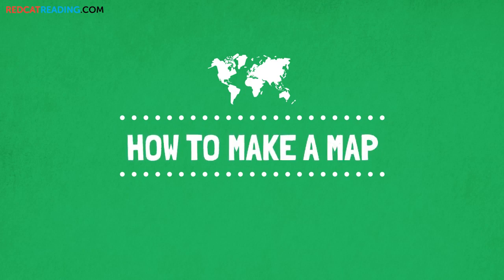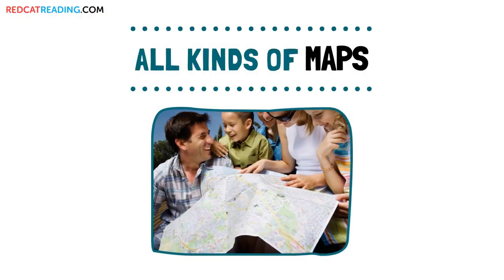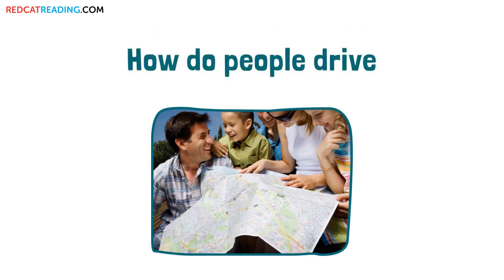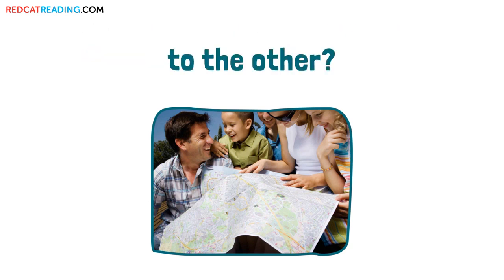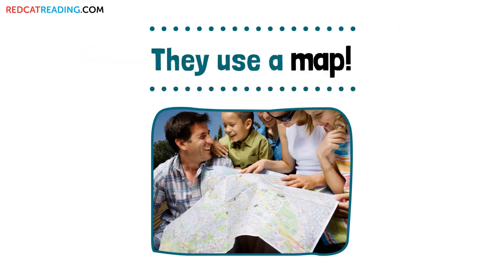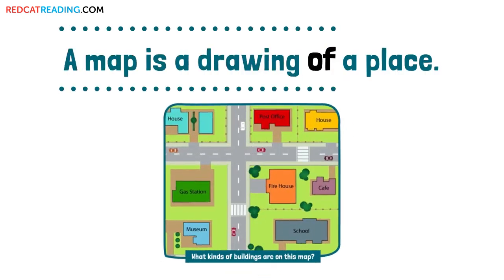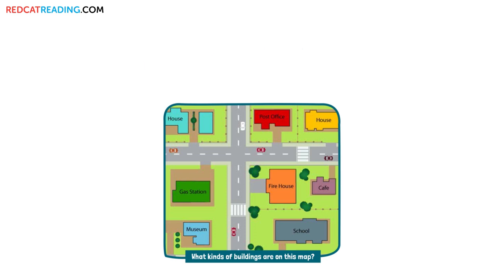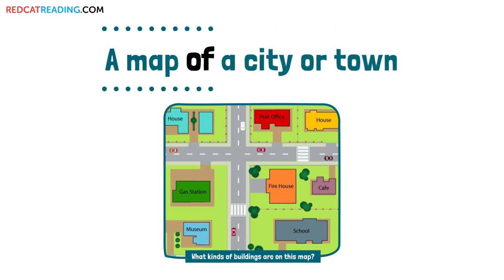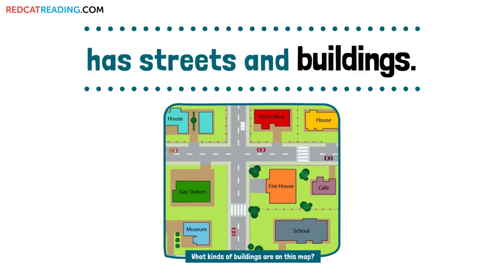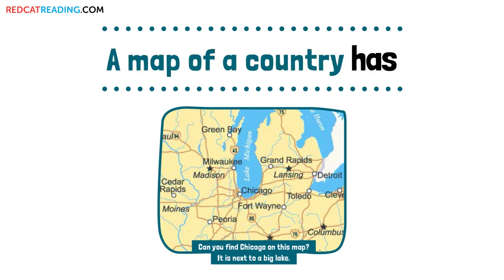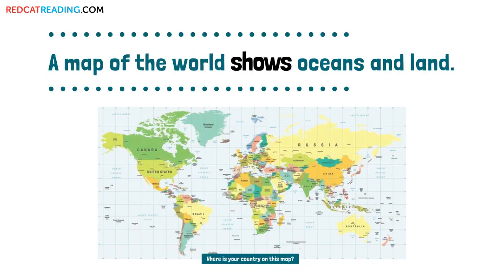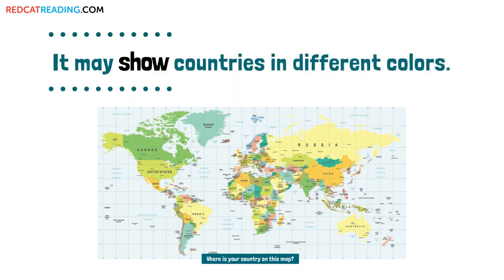How to make a map. All kinds of maps. How do people find their way around a new city? How do people drive from one side of a country to the other? They use a map. A map is a drawing of a place. Most maps show places as if you are looking down from an airplane. A map of a city or town has streets and buildings. A map of a country has states, cities, lakes, and rivers. A map of the world shows oceans and land. It may show countries in different colors.